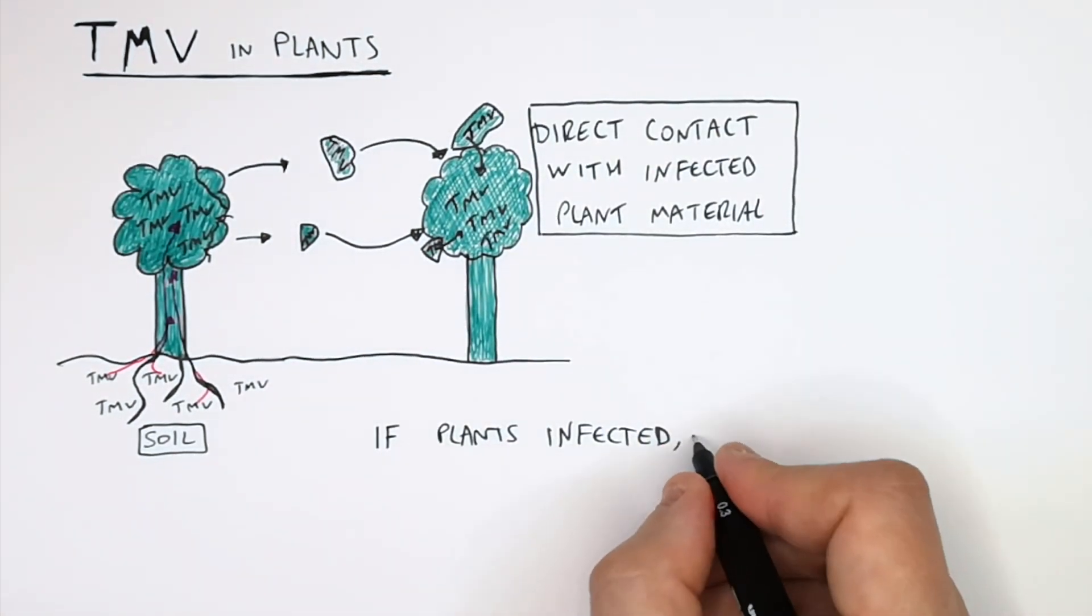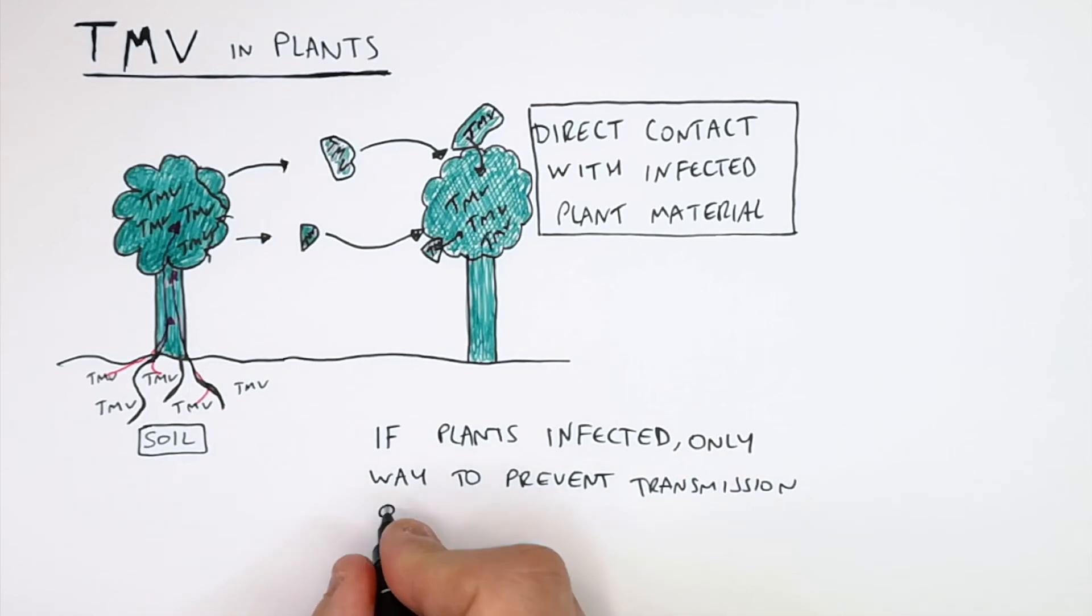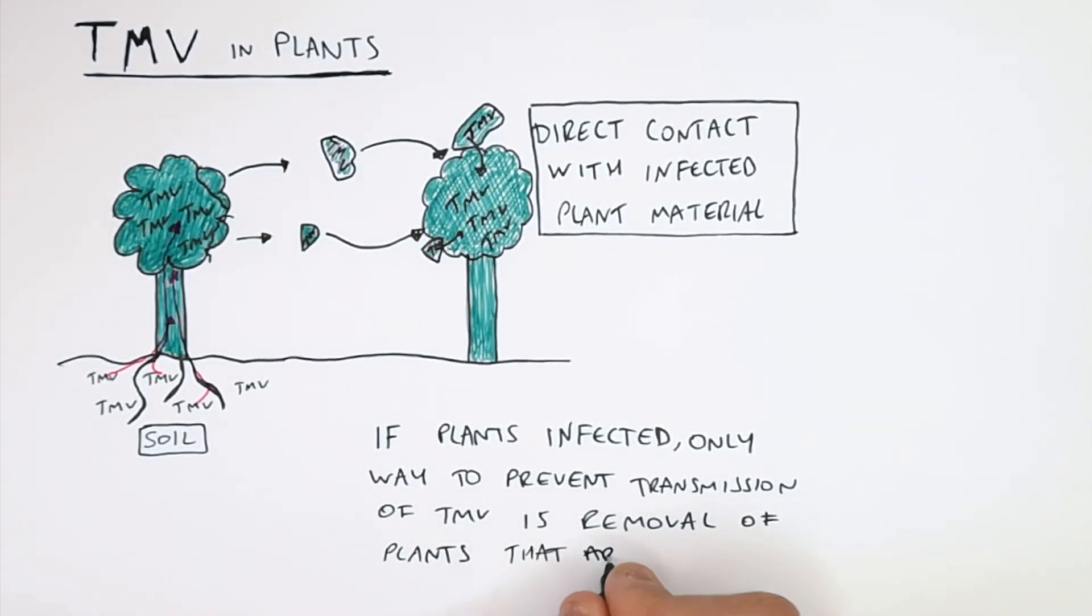If plants are infected, the only way to prevent transmission of TMV is the removal of the plants that are infected.